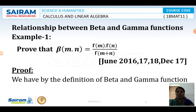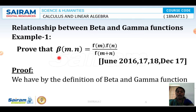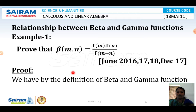Now we are going to see the theorem of relations between beta and gamma functions. The statement is: beta of m comma n is equal to gamma(m) into gamma(n) divided by gamma(m plus n). We are going to prove this result, which gives the relation between beta and gamma functions.